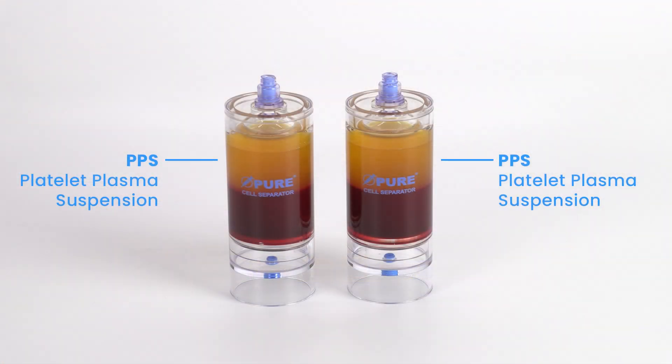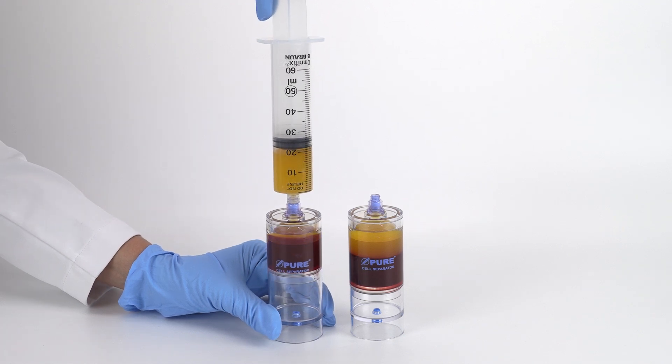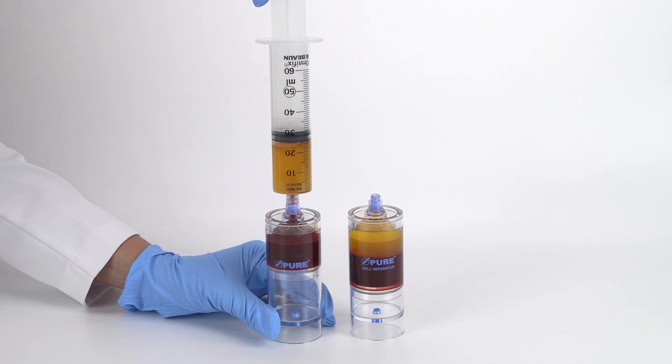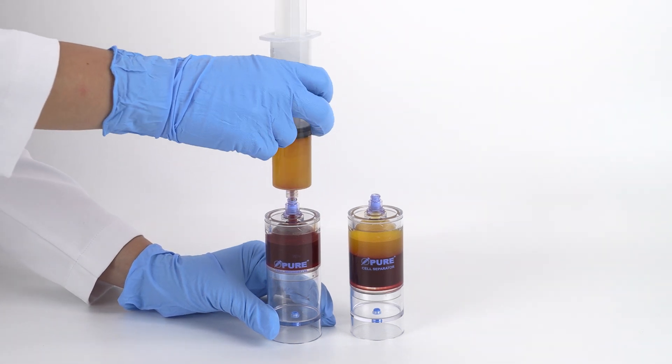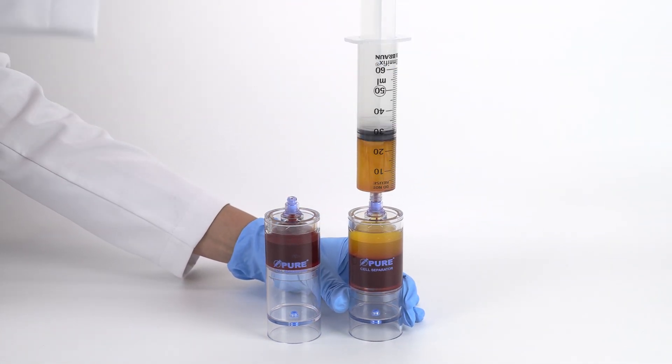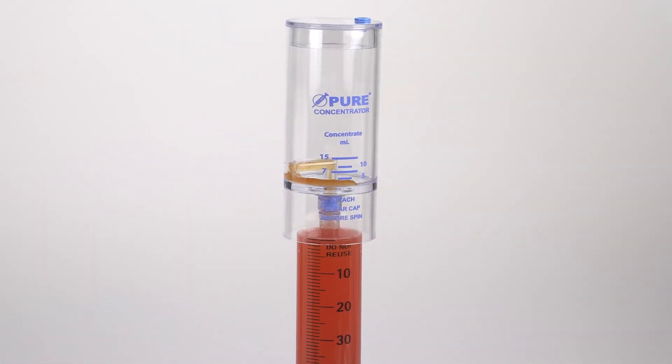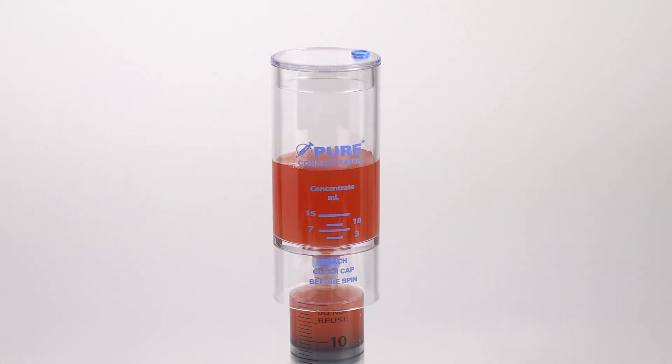After centrifugation, the platelet plasma suspension, or PPS, will be separated above the red blood cell layer. Attach a sterile syringe to the top port of each separator device and aspirate the platelet plasma suspension. Transfer the platelet plasma suspension into the concentrator device.